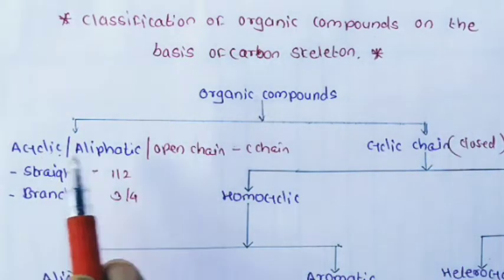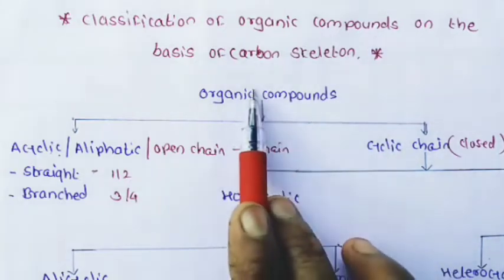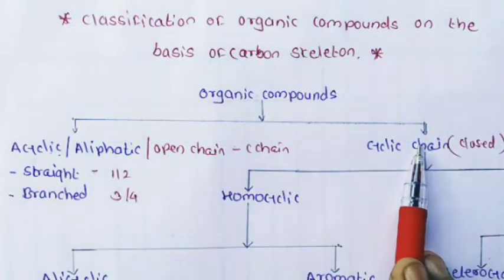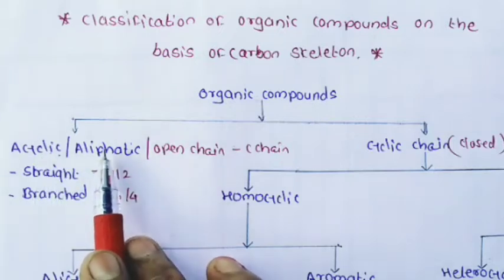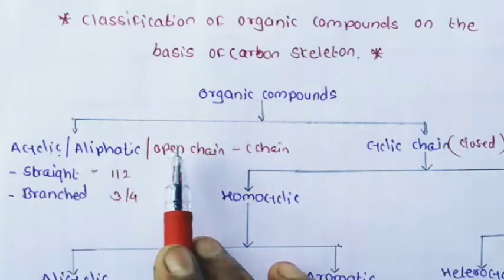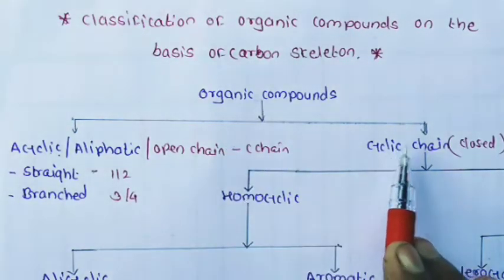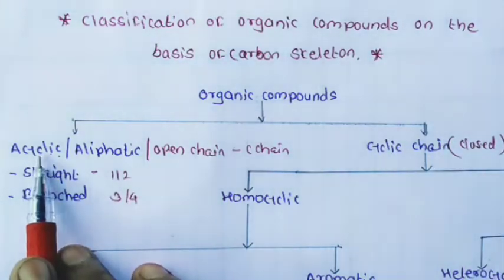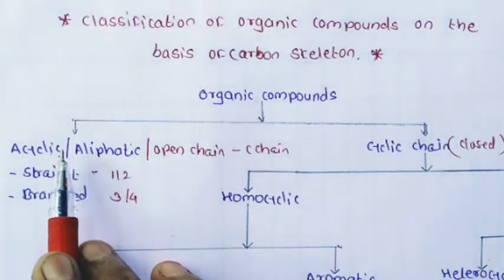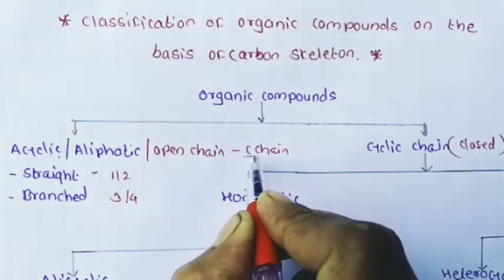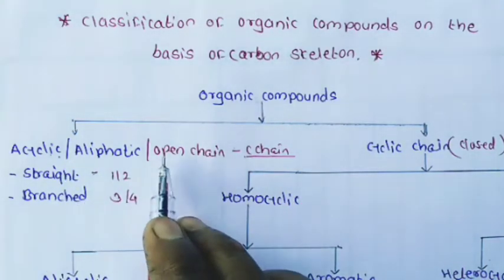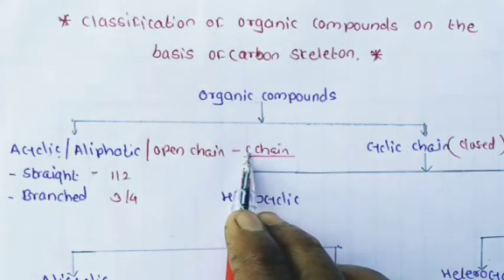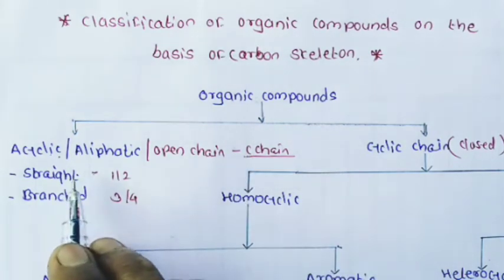The first type is acyclic compound and the second is cyclic compound. Acyclic compound is also called aliphatic compound or open chain compound. Cyclic compound is also called closed chain compound. In acyclic compounds, the molecule has a chain of carbon atoms, and this chain may be either a straight chain or a branched chain.